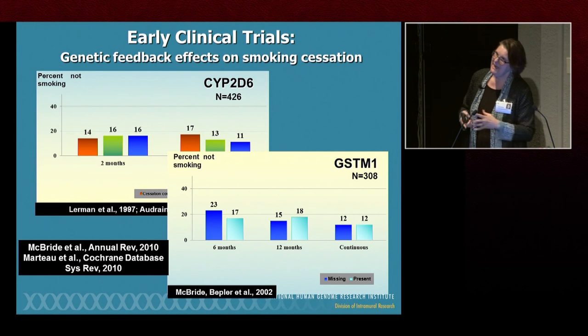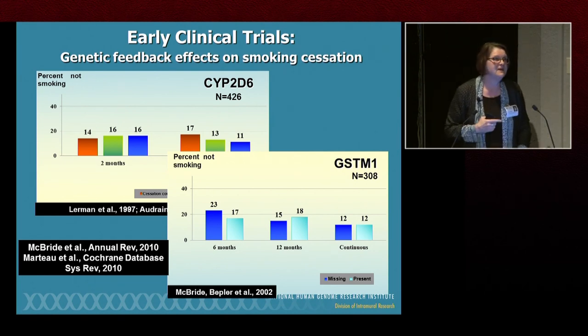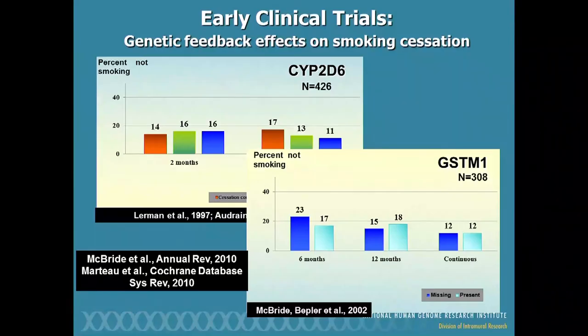Since then there have been several reviews, and most recently Theresa Marteau did another Cochrane database review concluding this isn't working — giving genetic risk information to individuals to get them to change smoking or diet is showing no effect across studies. I would argue there are lots of reasons why this hasn't worked. One is that in both cases, most people who show up for smoking cessation interventions are already highly motivated — this is a last-ditch effort. The idea is to try to identify populations where motivation is not as high and see if risk communications have a bigger effect there.